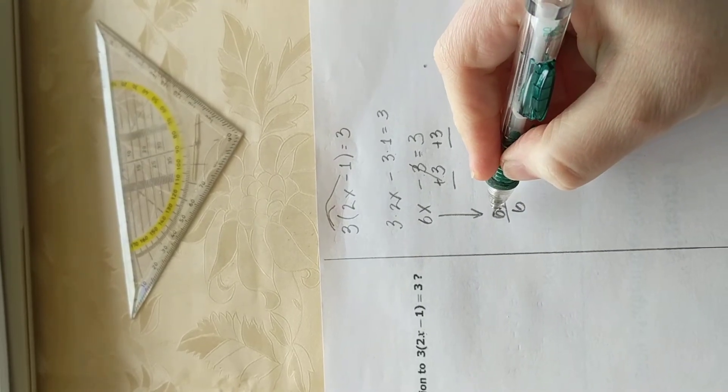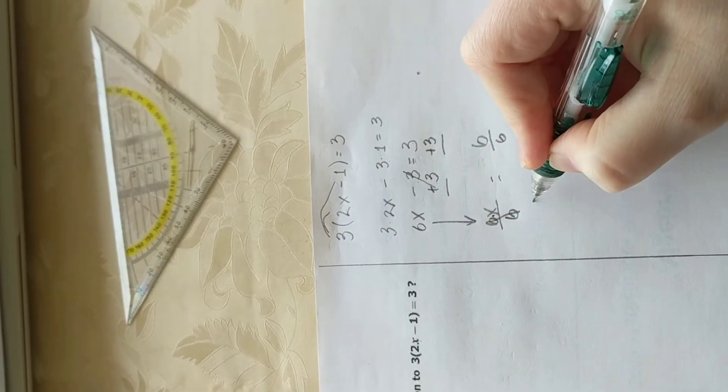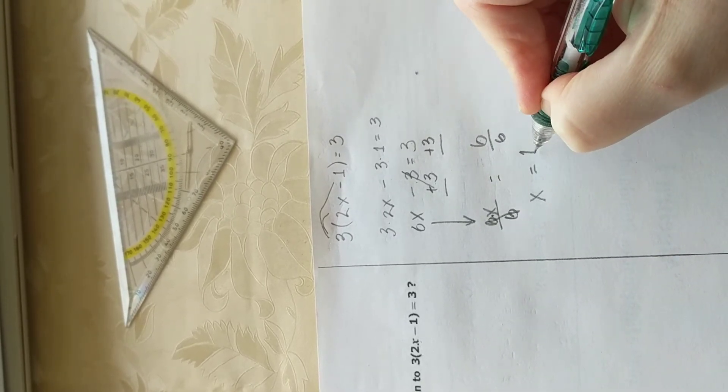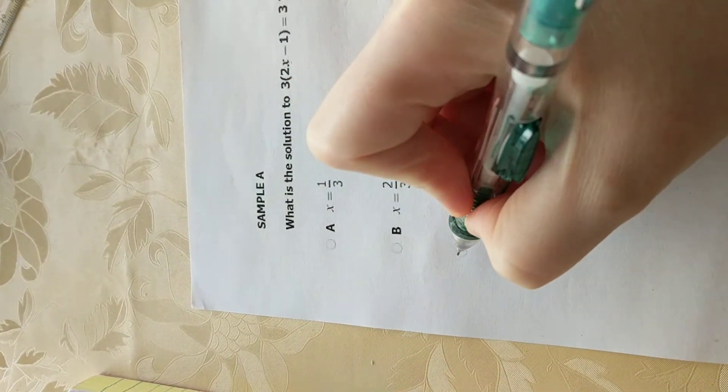Okay, so now, six divided by six is just one. One times x is x. And again, on the right-hand side, six divided by six is just one. And that is our answer. So we are choosing answer number C.